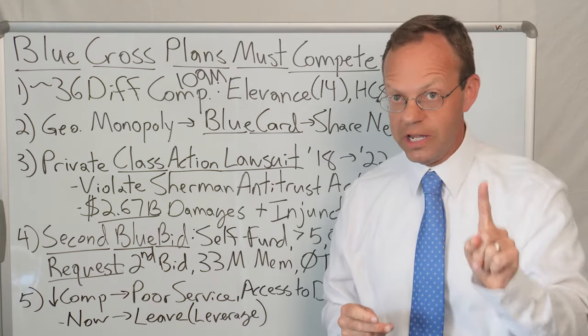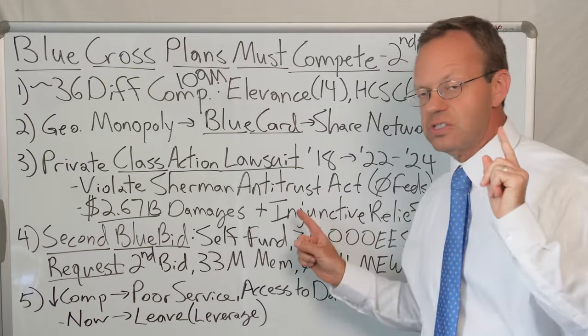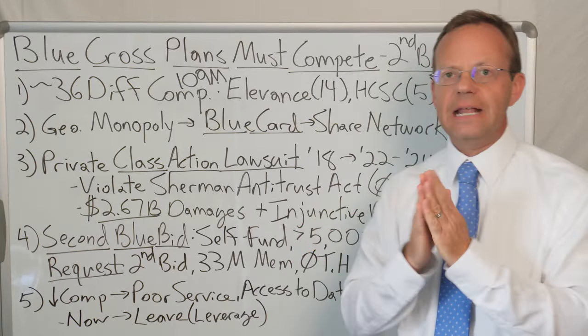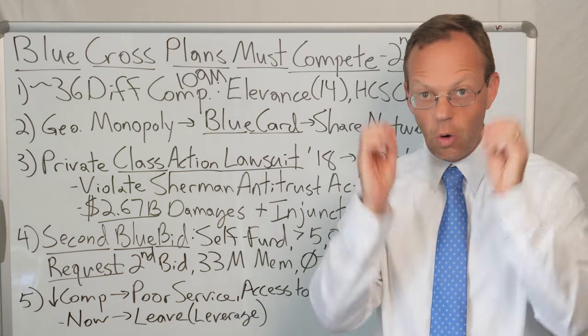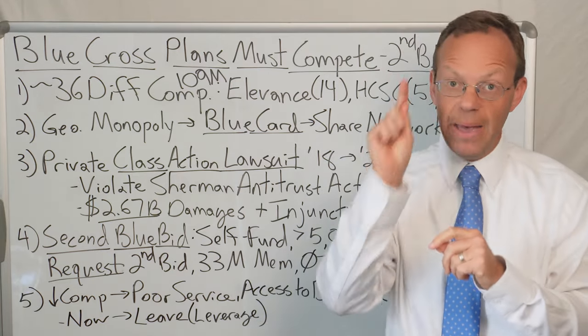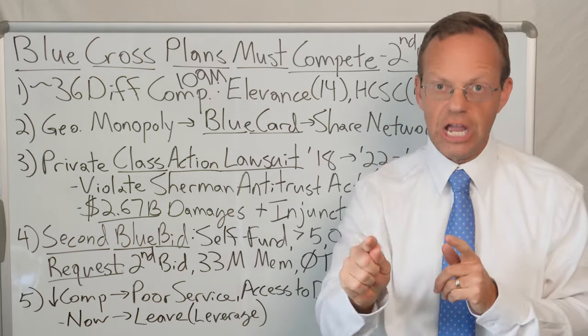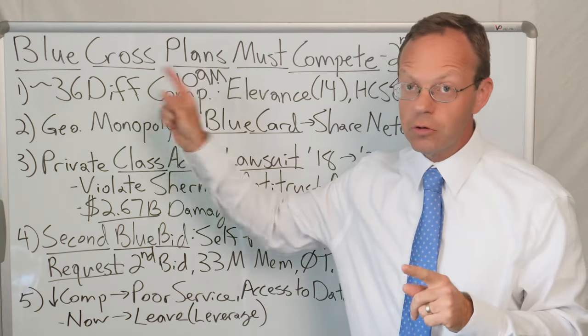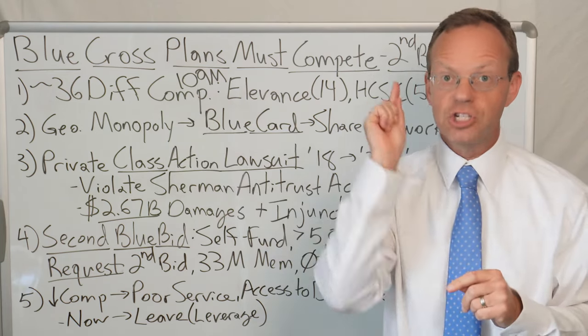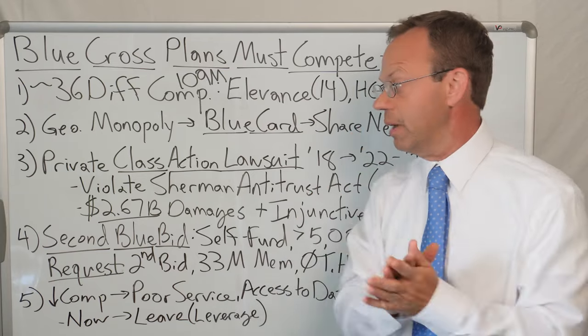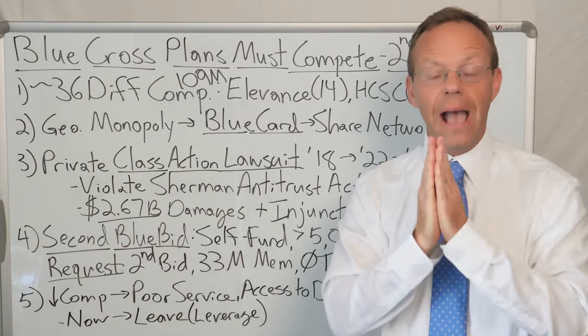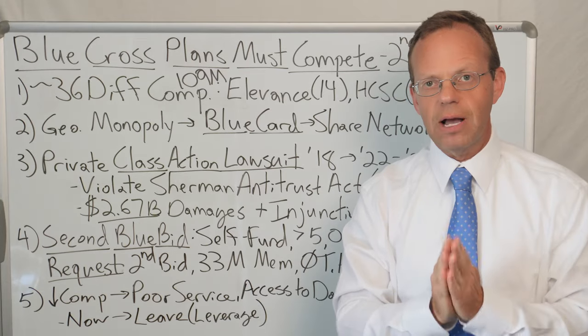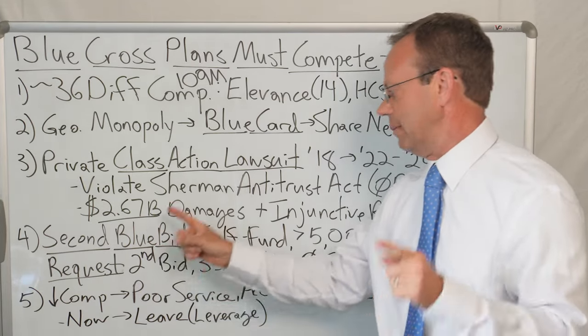And this is the huge part here, the settlement provided for what's called injunctive relief. And injunctive relief is when the court or the settlement compels the business to change its practices. So now the Blue Cross Association and all the Blue Cross plans are being compelled to change. And how are they being compelled to change? Well, they now have to compete with each other across state lines through a process that's referred to as Second Blue Bid.